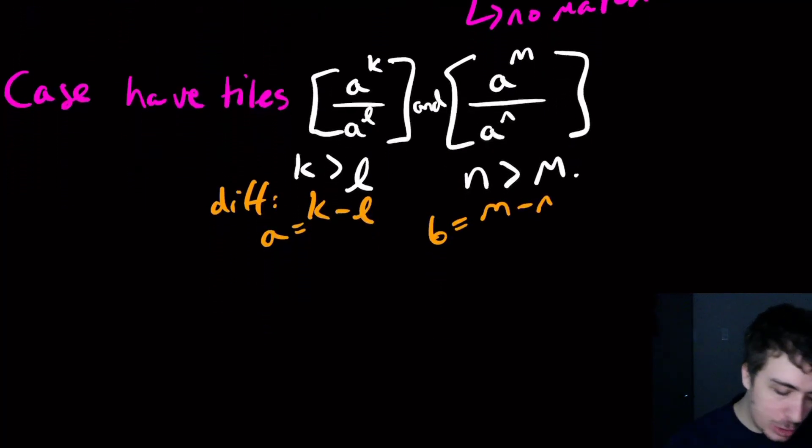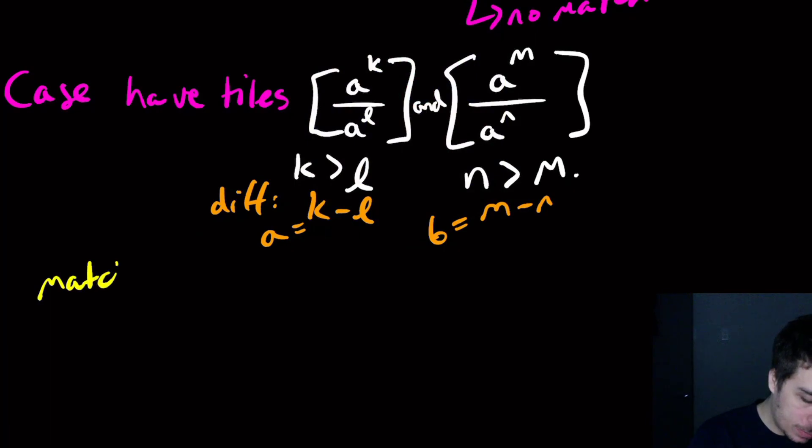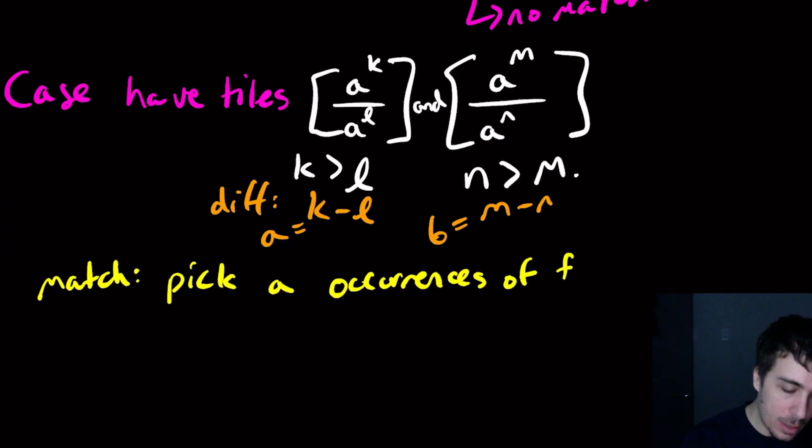So let's say that this number is A here and this number is B. Well then, all that we need to do for a match, so the match is going to be pick A occurrences of the first tile, oh sorry, of the second tile, that's what I meant, second tile, and B occurrences of the first tile.